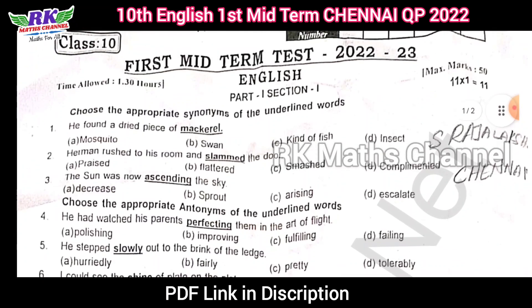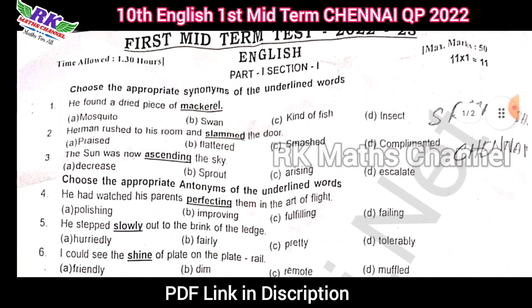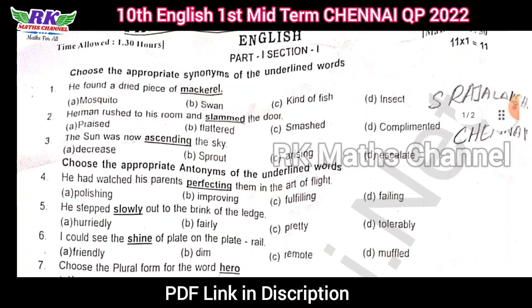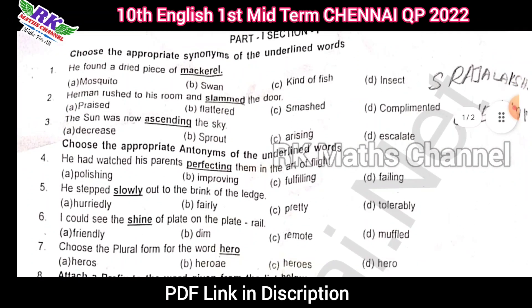So, if you look at the English question paper, we have a total of 50 marks and one and a half hour time. First, we have 11 marks.